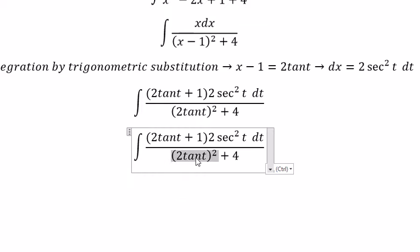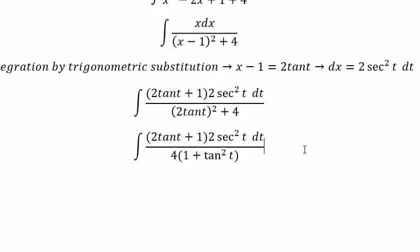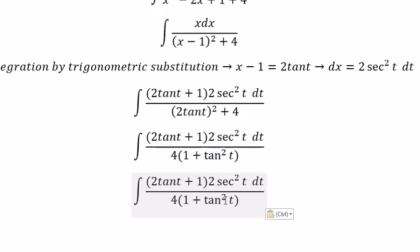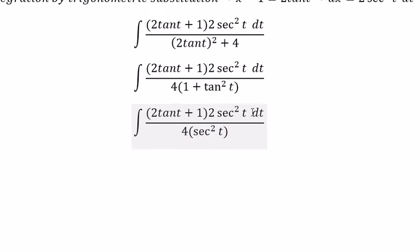So this one you got 4 tan squared t. And this one we can do factorization. This one we got sec squared t. We simplify sec squared t and 2 over 4.